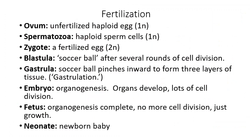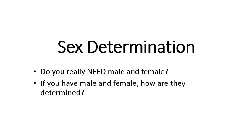When the baby comes out, we have a neonate. Now, how do we determine whether you're male or female? Do we even need two sexes? Many organisms don't have two sexes — many reproduce through binary fission producing identical offspring. Others are hermaphrodites, like worms in phylum Annelida, which have both male and female reproductive organs and can self-fertilize, though reproducing with other individuals is evolutionarily preferable.